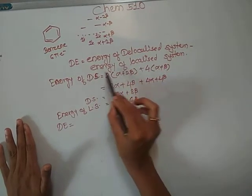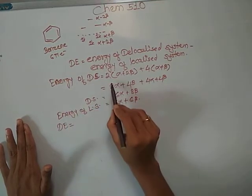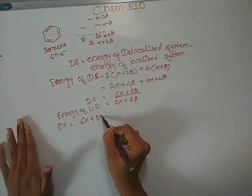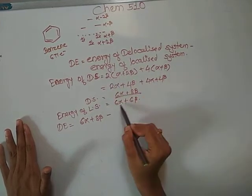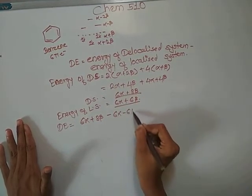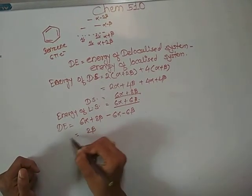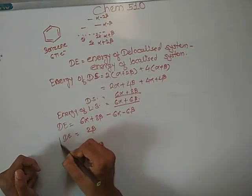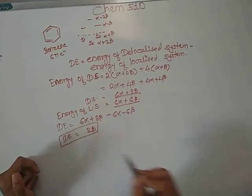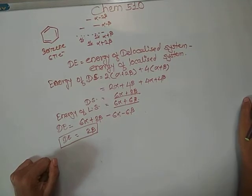So the delocalization energy equals the energy of the delocalized system minus the energy of the localized system: (6α + 8β) − (6α + 6β) = 2β. This is the delocalization energy of benzene.